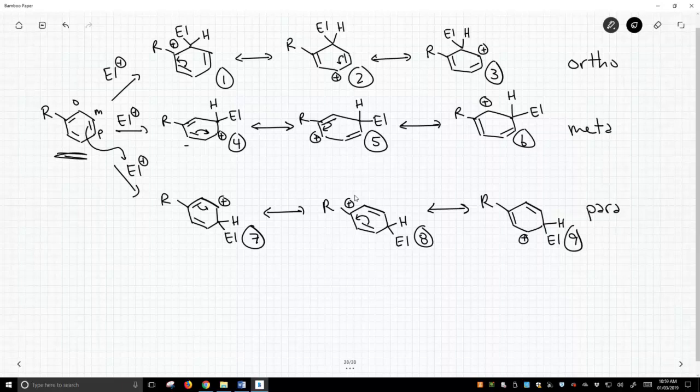These are the possible structures that we can generate as we consider electrophilic aromatic substitution on a substituted benzene ring. Which of these structures are drawn in a way that highlights how the R group could stabilize or destabilize the positive charge in the structure?